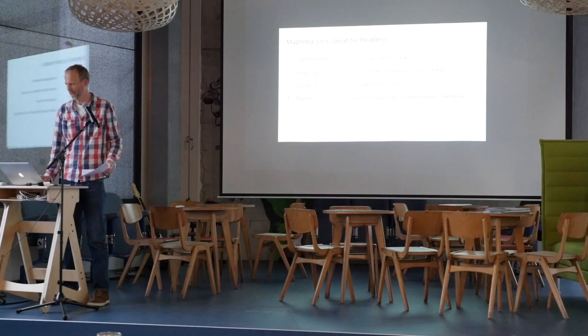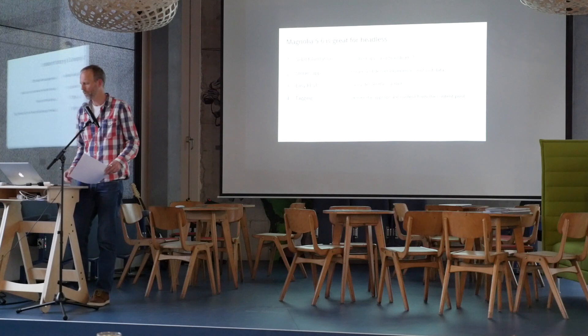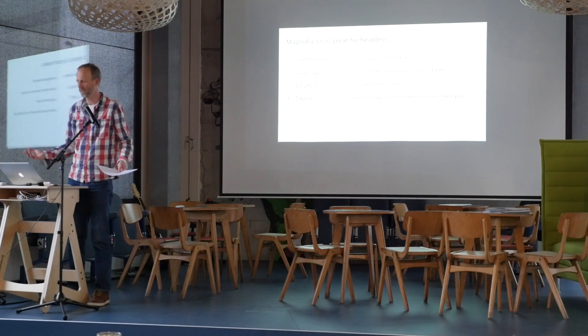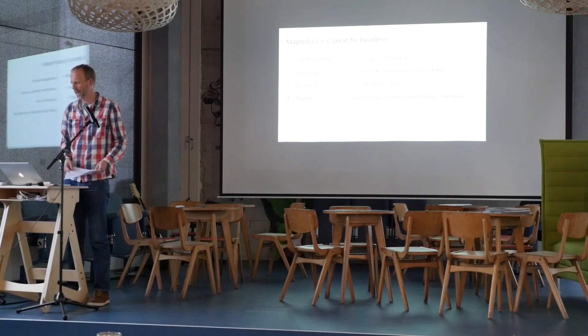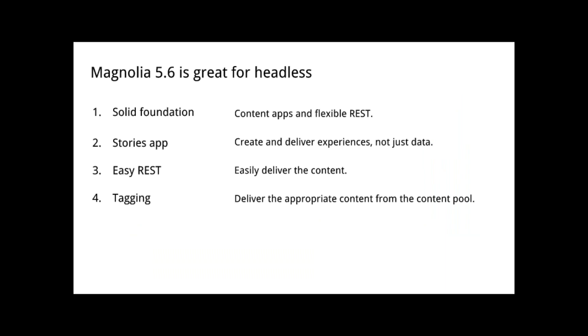So that's basically the value of headless — I'm simplifying, but those are the salient points. Now I want to make the case that Magnolia 5.6 is great for headless. We already had a solid foundation — we've had the content apps for years, which is a hallmark of a headless CMS. We've also had very flexible REST where you could pretty much do anything you wanted — you could use Java, make your own endpoints, and certainly achieve anything.